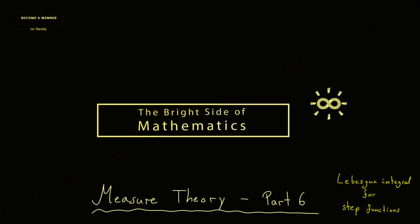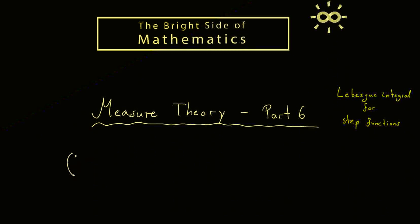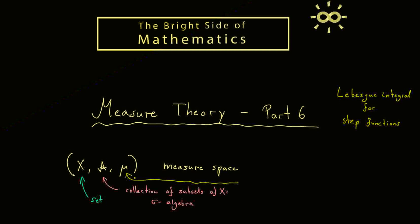We will learn how to integrate functions that are defined on an abstract measure space. As a short recap, a measure space is nothing more than a triple. There we have a set x, a sigma algebra a, and also a measure mu. This means that x could be any set, but a is a special collection of subsets of x. The measure mu itself is indeed a map, where the domain is the sigma algebra a and the codomain is the interval included 0 and also included the symbol infinity.